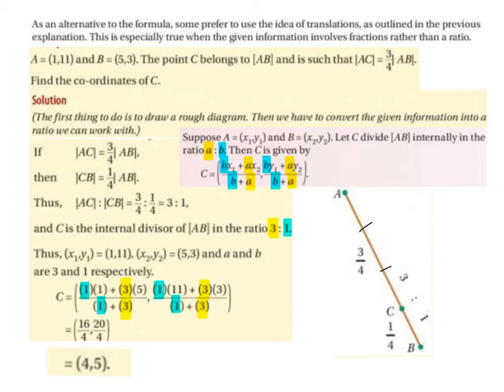So we're going to use our formula, which is given to us in the formula book. So C is equal to (bx1 + ax2)/(b + a), (by1 + ay2)/(b + a). So it's going to be 1 times 1, plus 3 by 5, all divided by 1 plus 3. Comma.